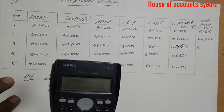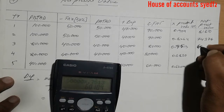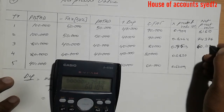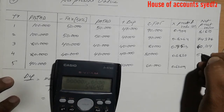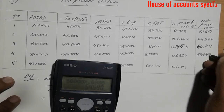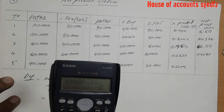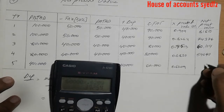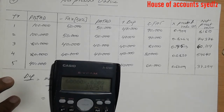Eighty thousand into 0.7513 gives 60,104. Now eighty thousand into 0.6830 gives 54,640. And sixty thousand into 0.6209 gives 37,254.